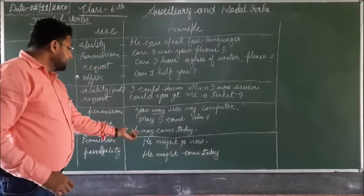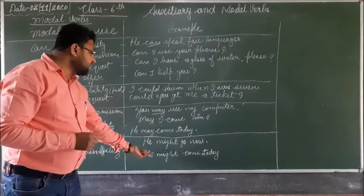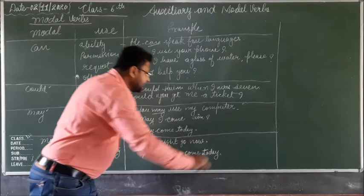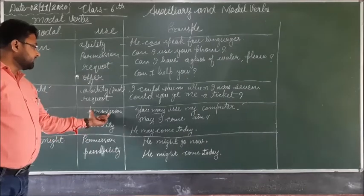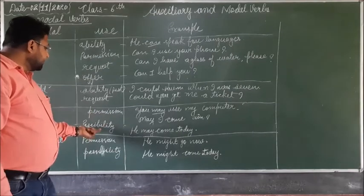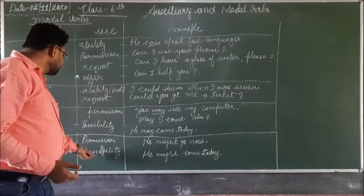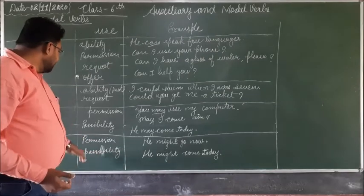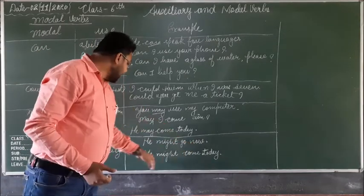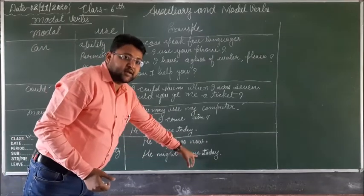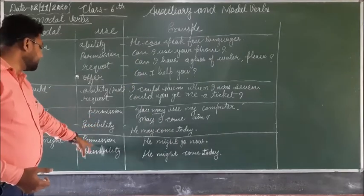May and might are both used to show possibility. If the possibility is weak, might is used. If the possibility is strong, may is used. 'He may come today' shows a stronger possibility. 'He might come today' means there is less possibility. So both may and might are used to express permission and possibility — either weak or strong.